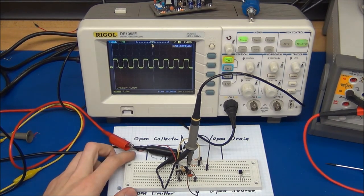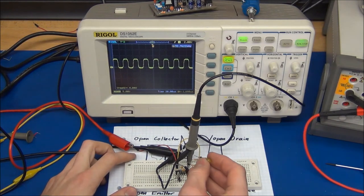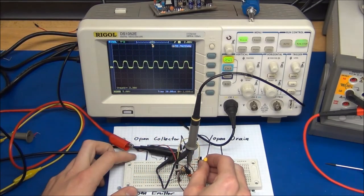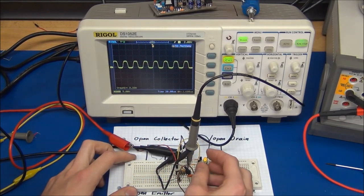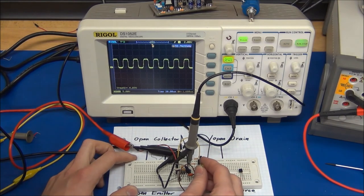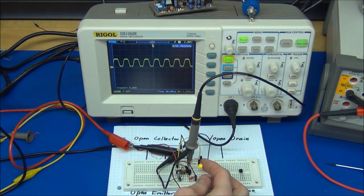And since this is a push-pull output, I can connect an LED from the output to ground, and it will light up. I can also connect it the other way around, so I connect it from the output to the positive, and it will also light up.